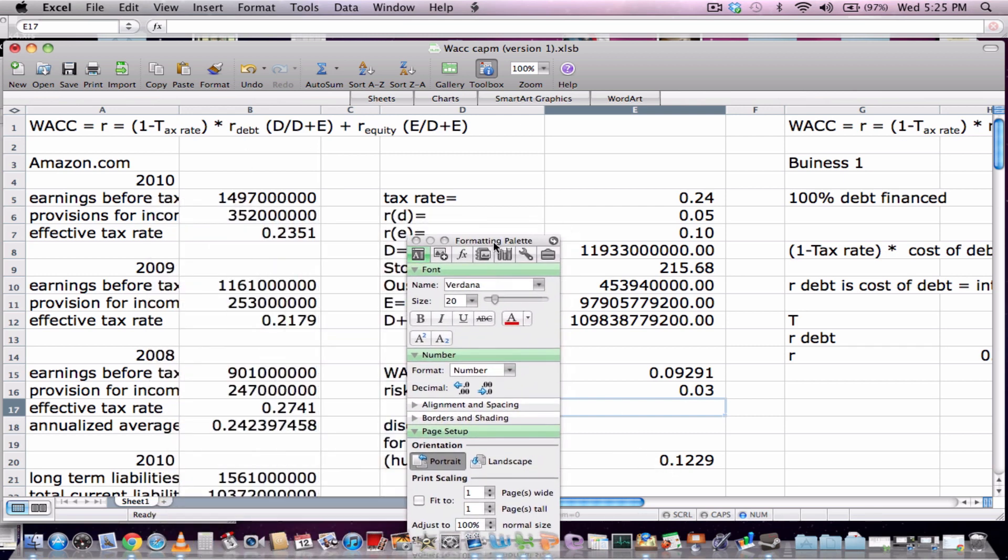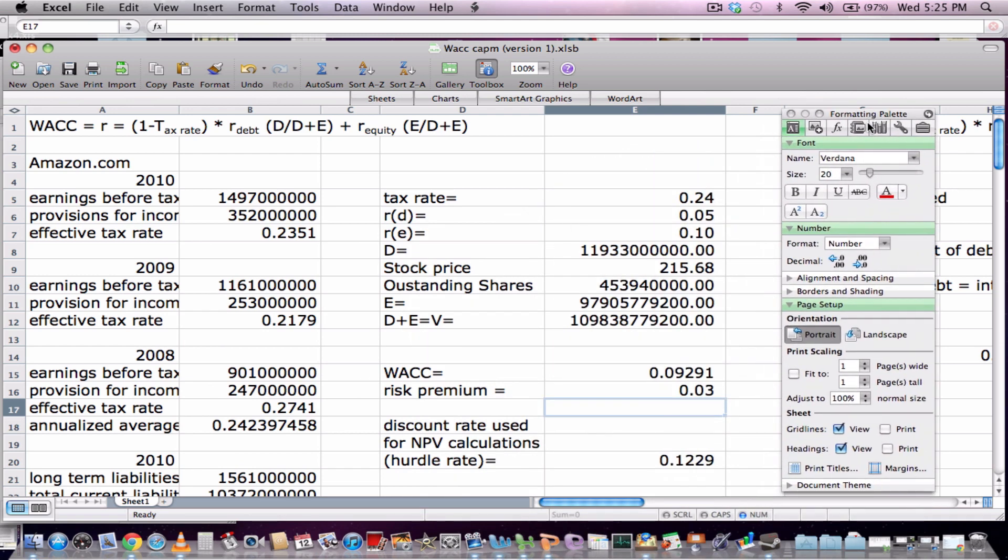So, that is our explanation of how to do a real world example of weighted average cost of capital. And if you'd like to find out more on how to find the return on equity, please watch the next video. Thanks. Bye.